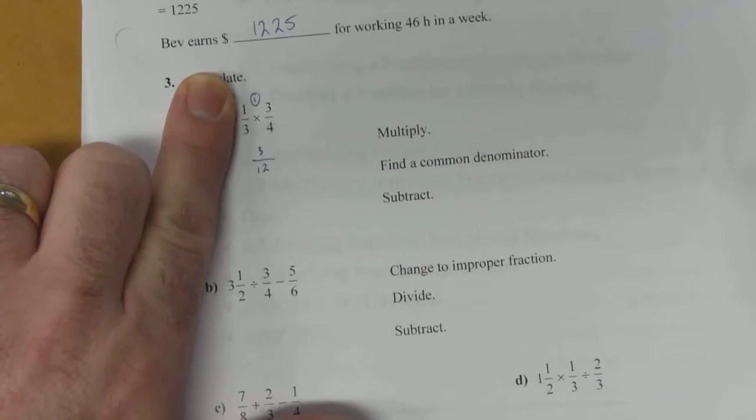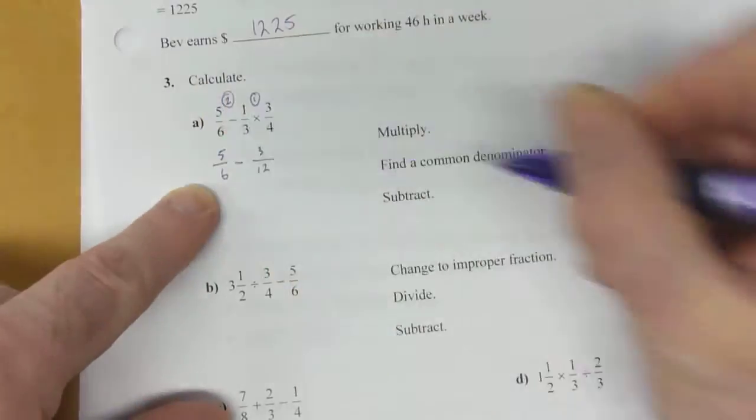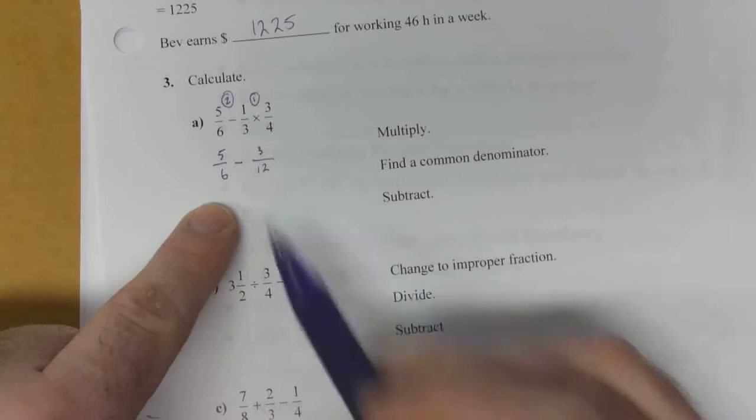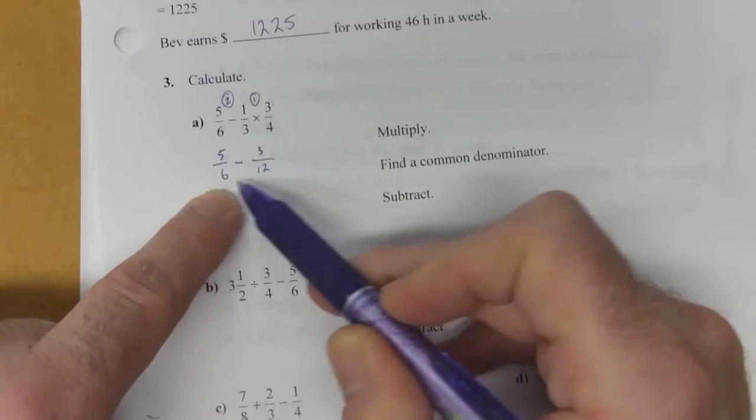So the multiplying part is done. Now we'll bring the subtraction piece down and rewrite it like this. So now this is subtraction, so we need a common denominator. We've got a 6 and 12 here.